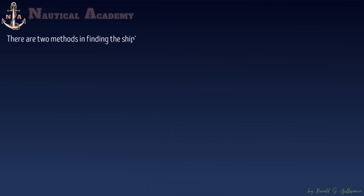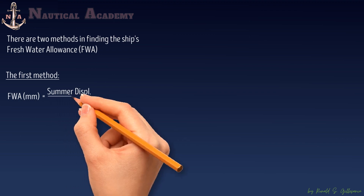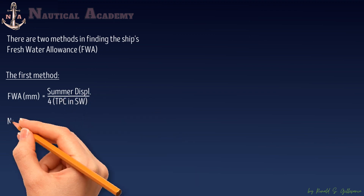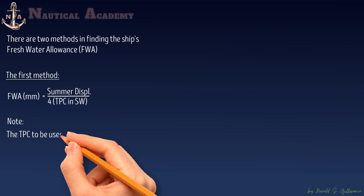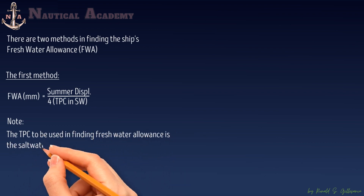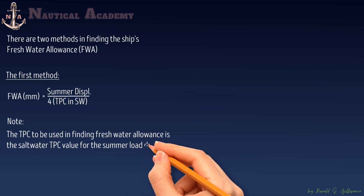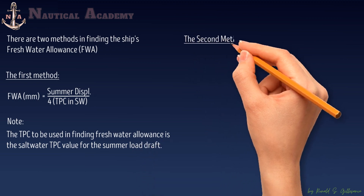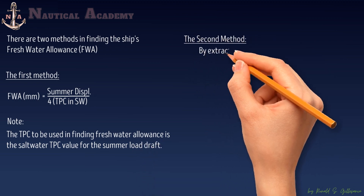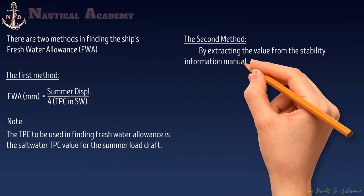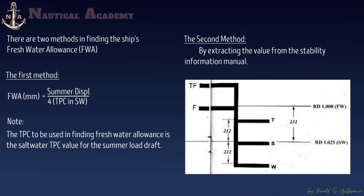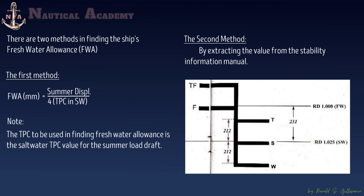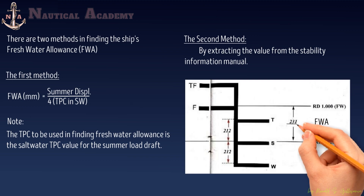There are two methods to find freshwater allowance. First, by solving mathematically using the formula: freshwater allowance in millimeters equals summer displacement divided by 4 times TPC in saltwater. The TPC to be used is the saltwater TPC value at the summer load draft. The second method is by extracting the value from the stability information manual. This is a photo of a load line from a ship's stability manual, showing a freshwater allowance of 231 millimeters.